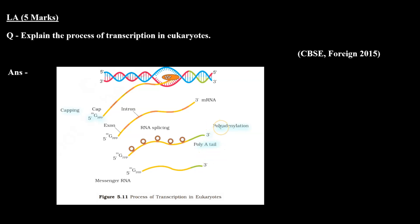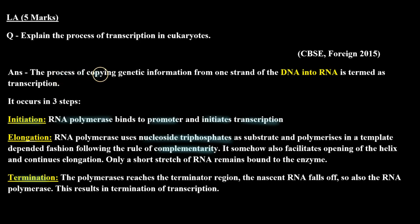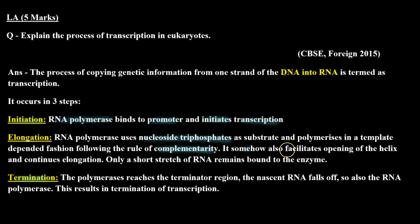The process of copying genetic information from one strand of DNA into RNA is termed transcription. It occurs in 3 steps. Initiation: RNA polymerase binds to the promoter and initiates transcription. Elongation: RNA polymerase uses nucleoside triphosphates as substrate and polymerizes in a template-dependent fashion following the rule of complementarity; it facilitates opening of the helix and only a short stretch of RNA remains bound to the enzyme. Termination: the polymerase reaches the terminator region and the nascent RNA falls off, along with the RNA polymerase, resulting in termination of transcription.